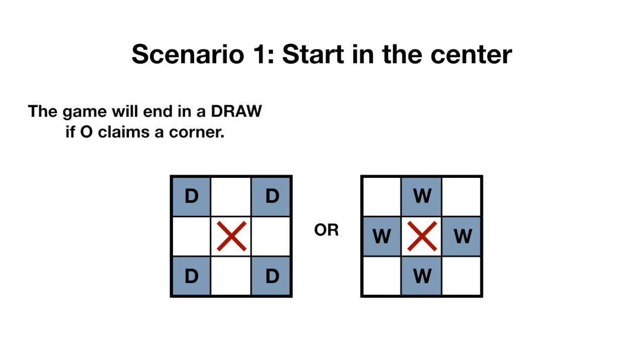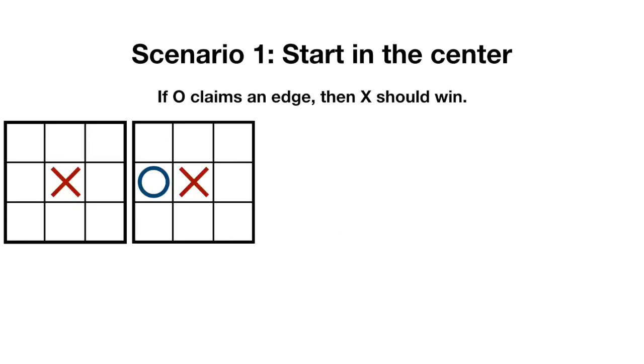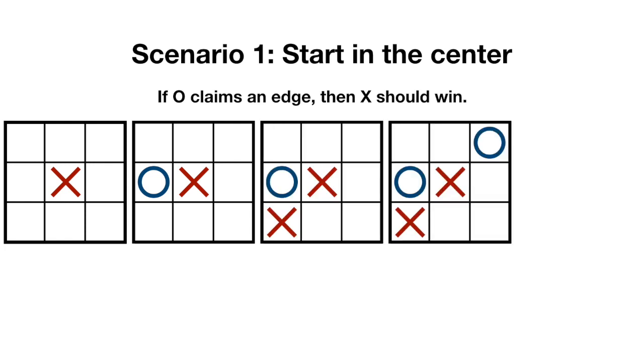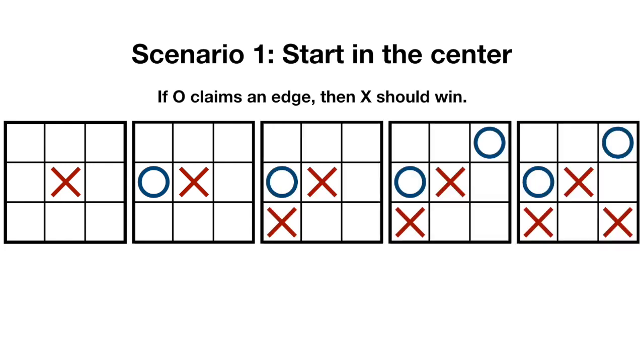The game should end in a draw if O claims a corner square, but team x should win if O claims an edge. To win when O claims an edge square, team x can play in the corner. Then O is forced to block, after which x can create a double threat. O had already lost the game after its first move.